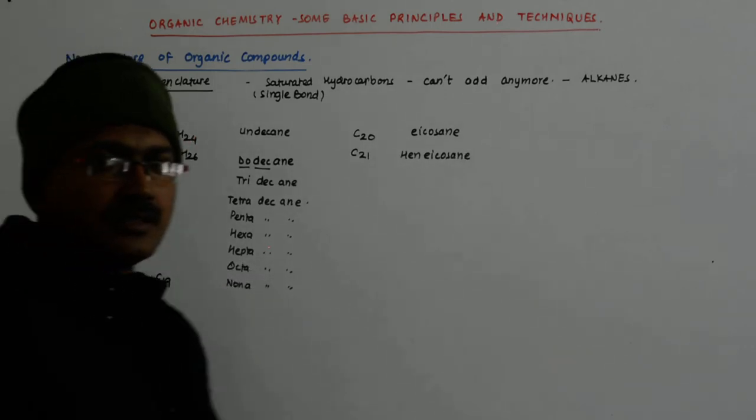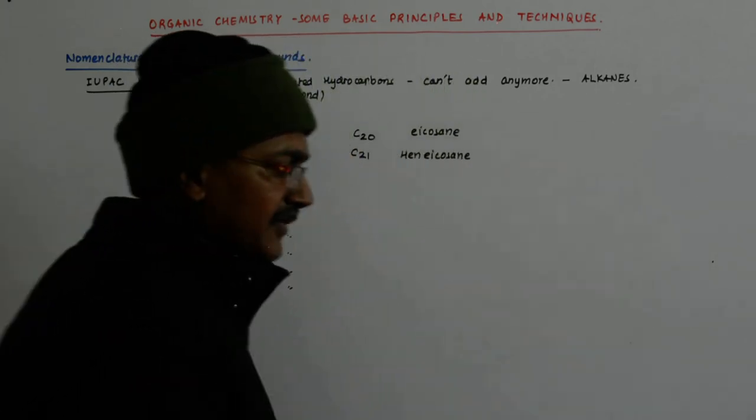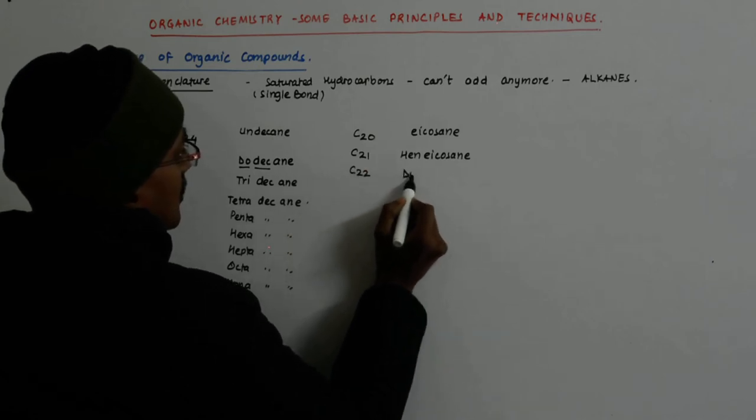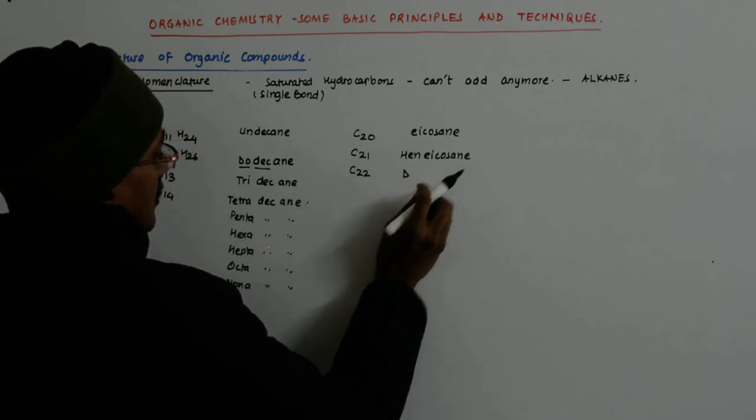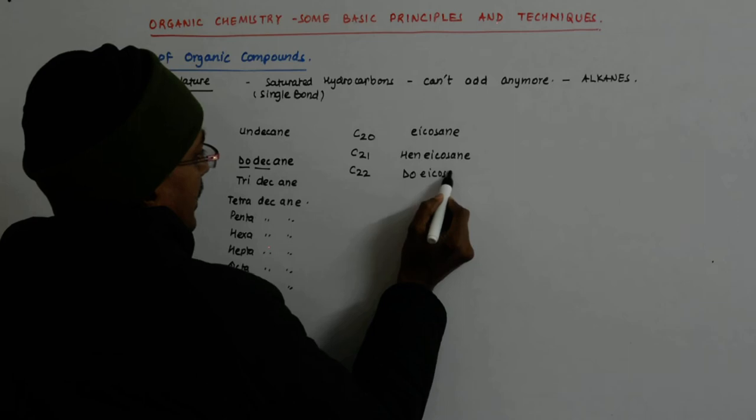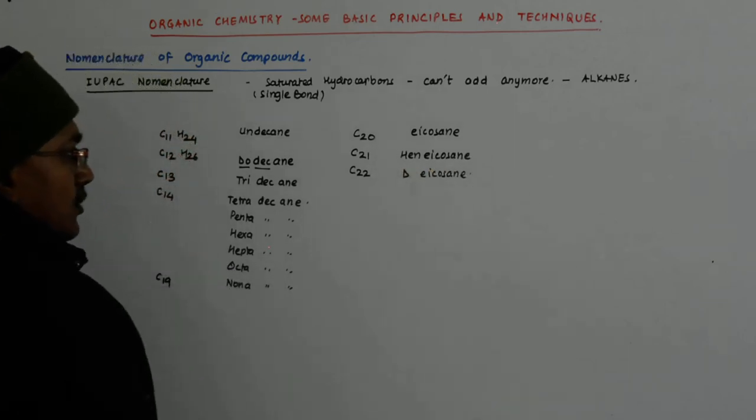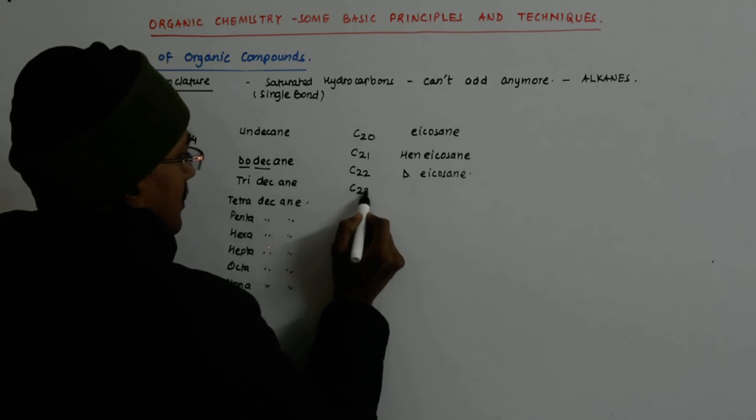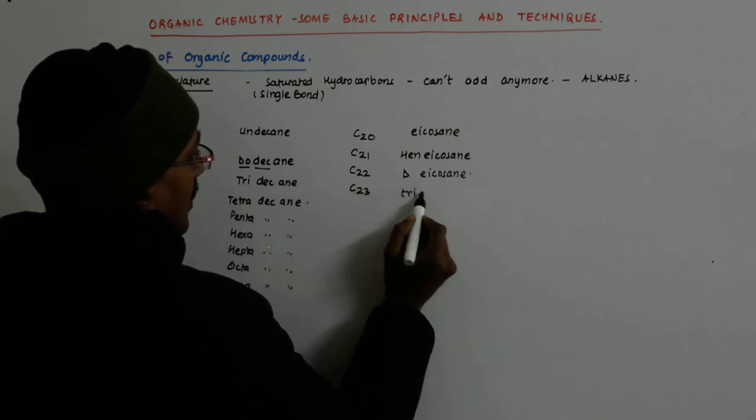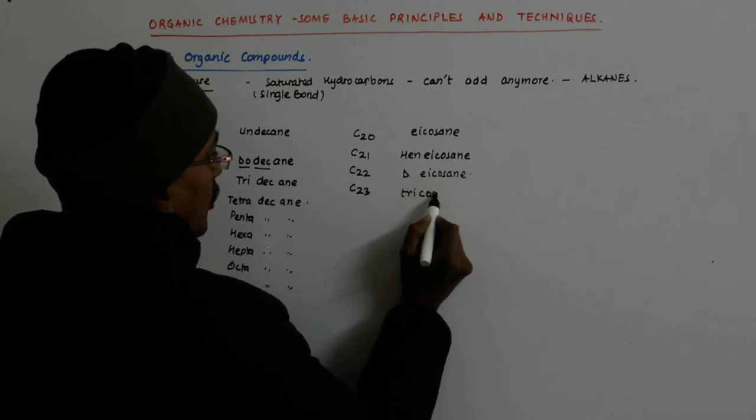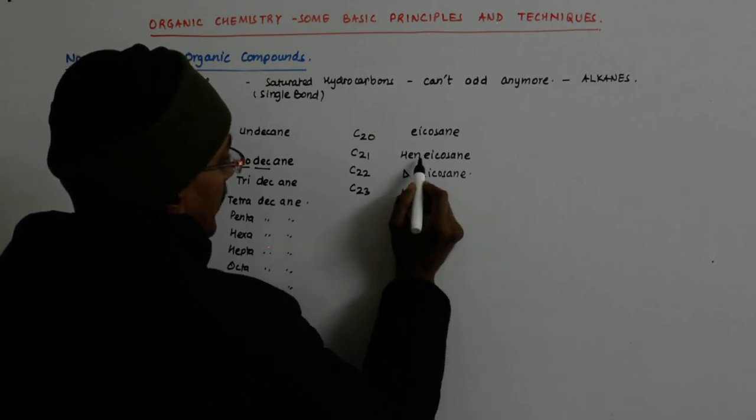But the saving grace is what? It is only this that changes. So 22 is, do icosane cannot go. So this goes docosane. And then it is the same story. Tri, tricosane. Tri, e, i goes away, you know?